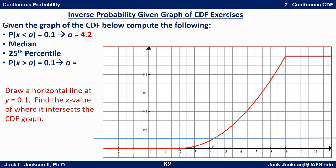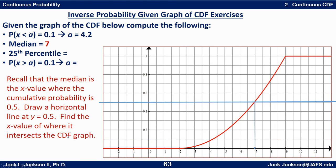Second problem: find the median. The median is an x value where the cumulative probability is 0.5. Draw a horizontal line at y equals 0.5, find where it crosses the curve and come straight down. That looks very close to 7, so the median is 7. The probability that x is less than 7 is one-half, and the probability that x is greater than 7 is also one-half.